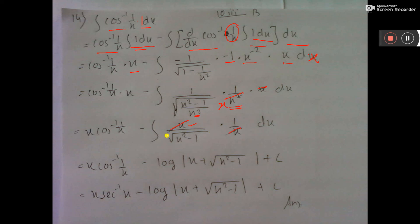Integration, 1 by root over of x square minus 1, there is one formula. Log mod x plus root over of x square minus 1 plus c, where c is integrating constant. You have to write this. And this is the answer.